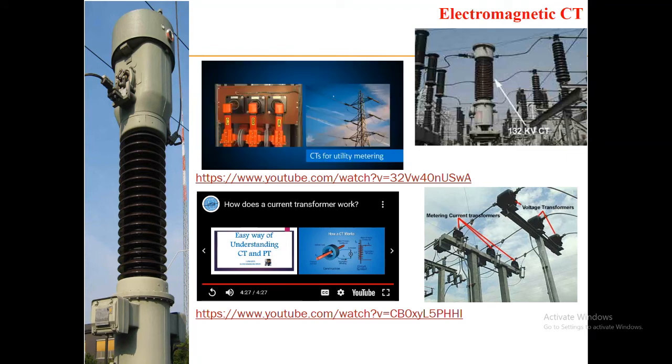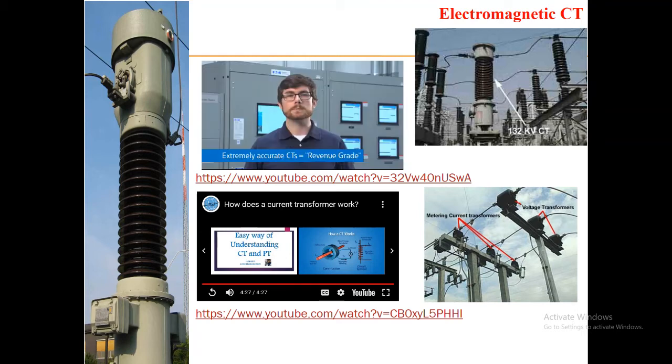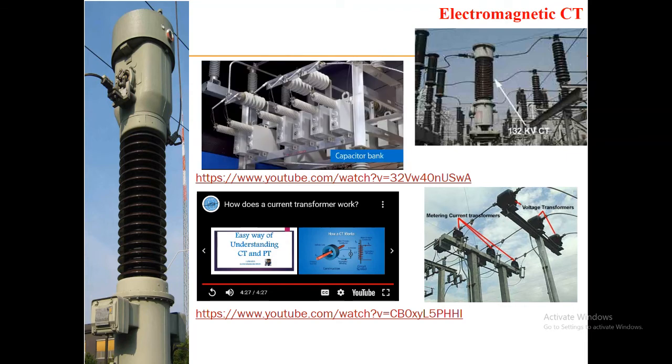For example, utilities use CTs at their customer's incoming service to monitor the current and power usage for billing purposes. These CTs must be extremely accurate and are considered revenue grade since they are used for billing.